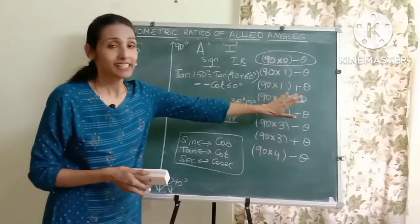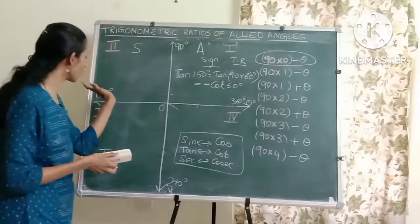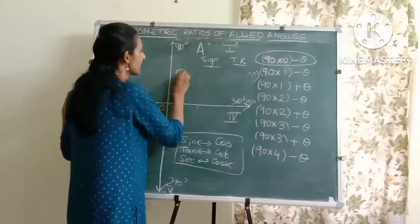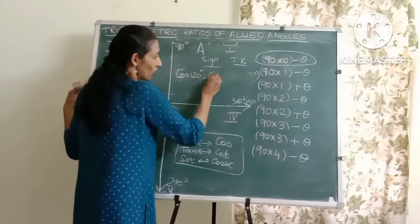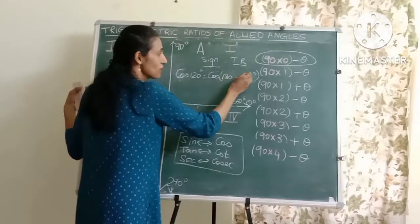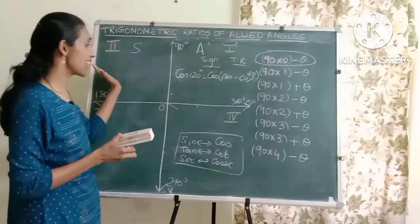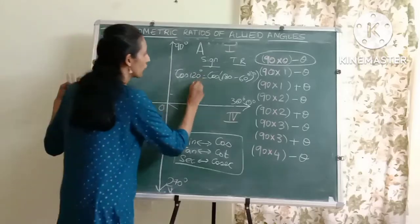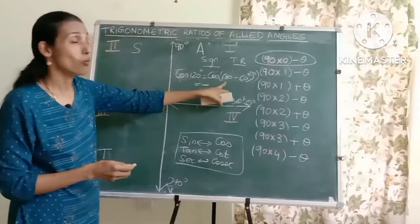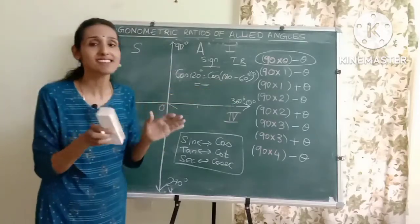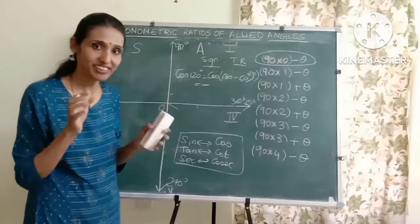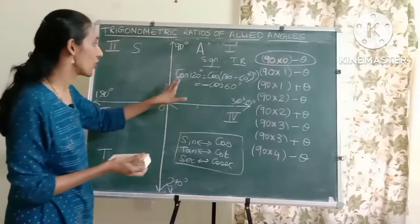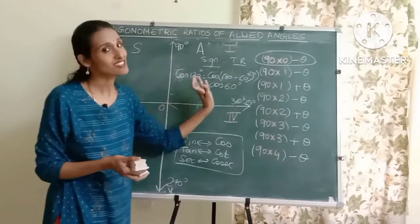For 180 minus theta, it will also lie in the second quadrant. Let's take cos of 120 degrees — I can write this as 180 minus 60. Because it lies in the second quadrant, cos will be negative. But since this involves 180, which lies on the x-axis, the x-axis never changes the trigonometric ratio, so cos remains cos and I write theta as 60 degrees. So cos of 120 is minus cos 60 degrees.